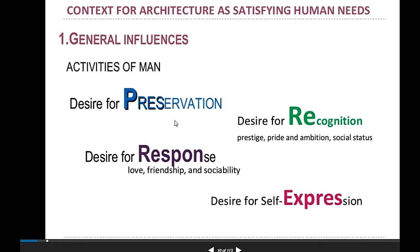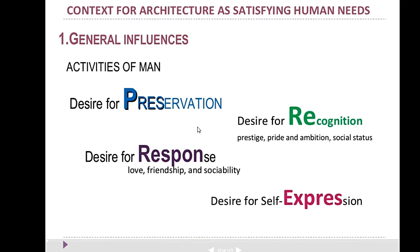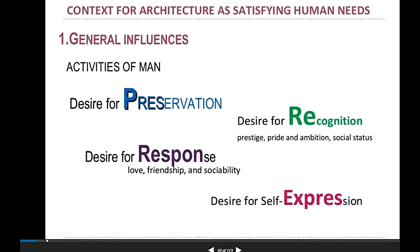The general influencing factors in architecture include, first, our desire for self-preservation — we build a house to protect ourselves. Second, desire for response — we want to impress our friends and community. Third, desire for recognition — we want the community to know we exist and that we have a beautiful home. And lastly, desire for self-expression — you can express yourself through the design of a building, through the form and character it projects.